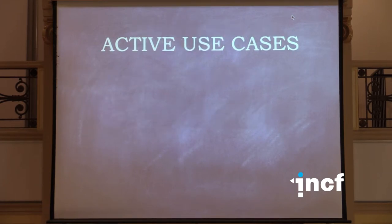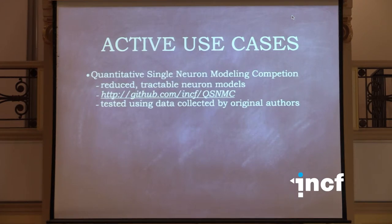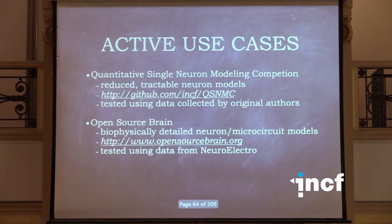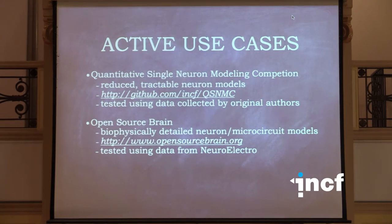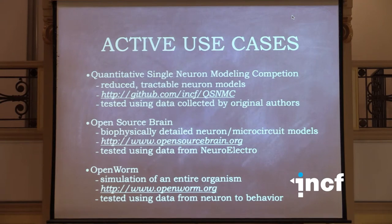What are the active use cases we're working on? There are sort of three scales. One is the quantitative single-neuron modeling competition with reduced models of neurons. Another is with Open Source Brain — Padraig talked about that — with biophysically detailed neuron models that are significantly more complex than the reduced models. Right now I can test about a dozen models across some of the 26 electrical properties in NeuroElectro and write validation tests for those — asking which granule cell models best reproduce spikes observed in granule cells under these conditions. And then OpenWorm, where you have the worm moving and you want to know if it moves in a way that matches the real worm.